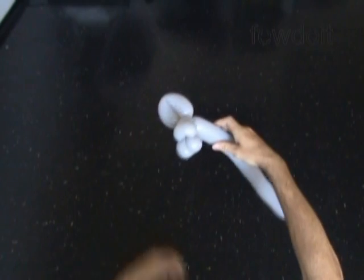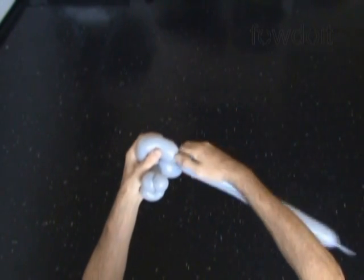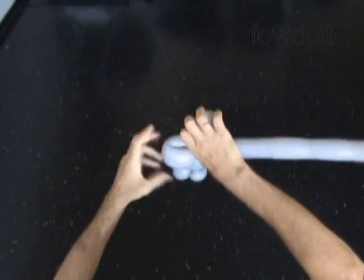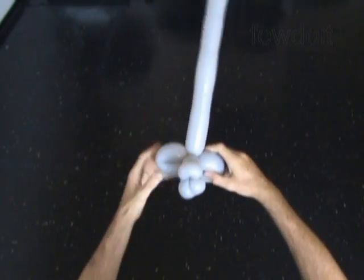Twist the sixth about 5 inch long bubble. The fifth and the sixth bubble should be the same size. Lock both ends of the sixth bubble in one lock twist. We have made the cheeks.